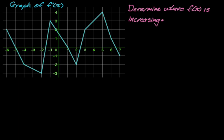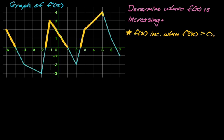We're given the graph of f prime of x and we want to determine where f of x is increasing. f of x is increasing when f prime is greater than zero, so I'm going to look at the graph and figure out where f prime is positive — meaning above the x-axis — and highlight those intervals.